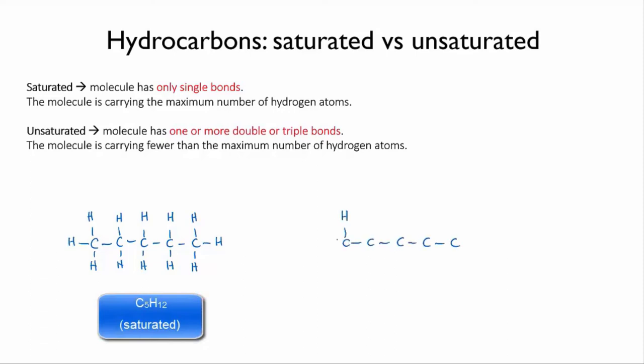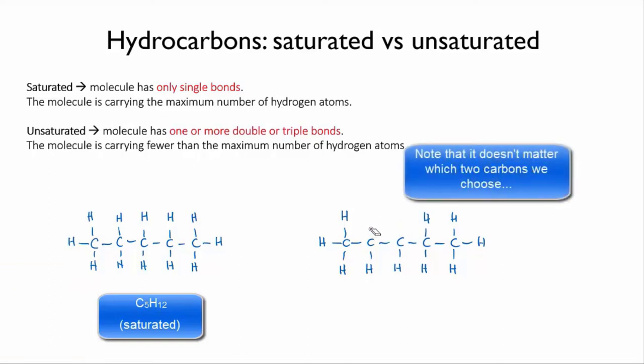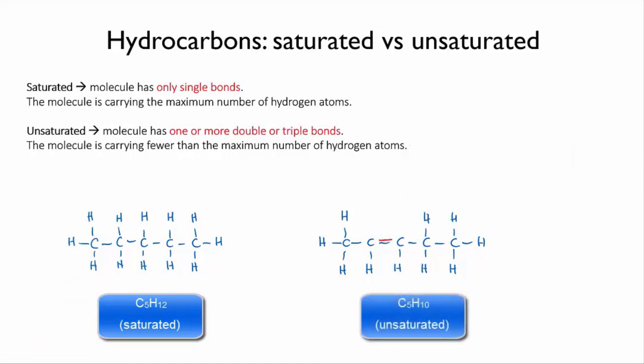However, let's draw it with a double bond between two of the carbon atoms, so it becomes pentene. In order to form this double bond, we need to lose a hydrogen from each of those two carbons, in order to free up two electrons to form the new double bond. So the molecular formula for this compound is C5H10.